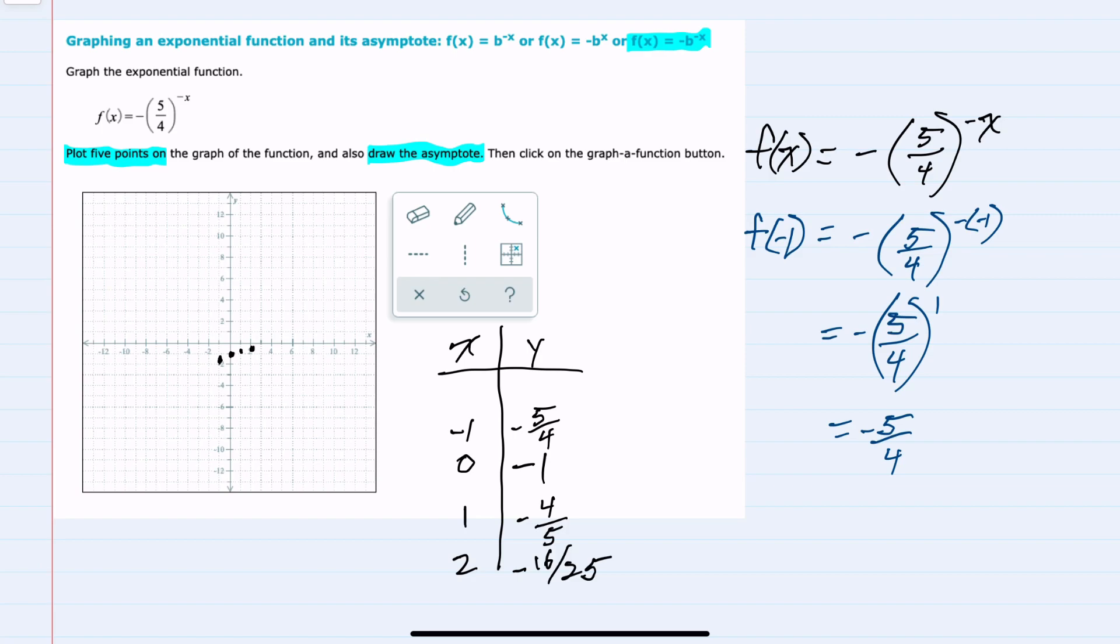Moving next to x equals negative two gives us a negative of negative two exponent, which simplifies to a positive two, leaving the negative on the outside is 25 over 16. So negative 25 over 16 is not quite negative two.